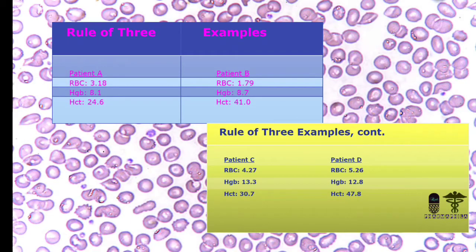Here you can see the implementation of rule of 3. For Patient A, the 3x multiple of RBC is HB, and the 3x multiple of HB is HCV. In all 4 patients — A, B, C, D — the rule of 3 is implemented.